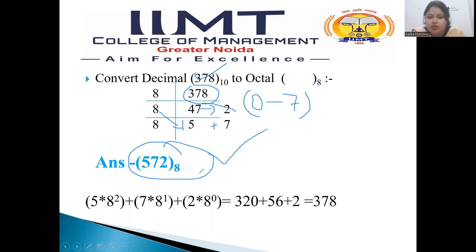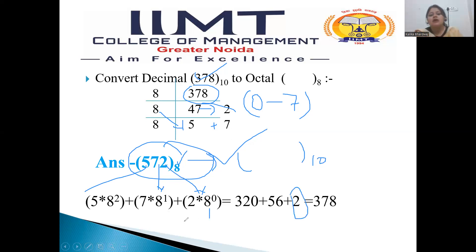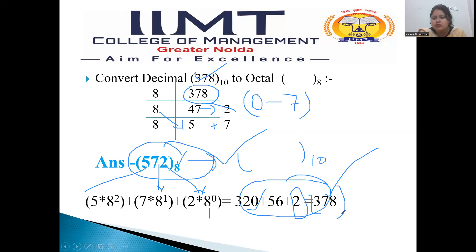If we want to check, or if the examiner asks to convert this octal number back into decimal: in decimal the power of 10 increases, in binary the power of 2 increases, and in octal the power of 8 increases. So we do: 2 into 8 to the power 0 is 2; 7 into 8 to the power 1 is 56; 5 into 8 to the power 2 is 5 into 64 is 320. When we add all these numbers, we get 378 to the base 10.